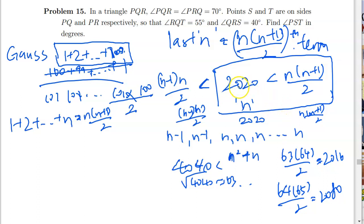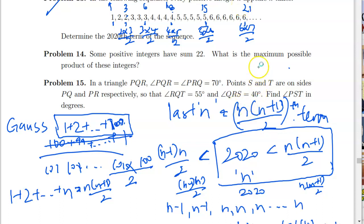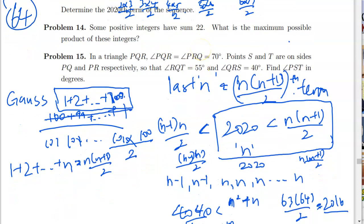So the 2020th term has a value of 64. I'm sorry — I made quite a few mistakes along the way in this explanation. The next video will also be long, covering the last three questions. See you in the next video!